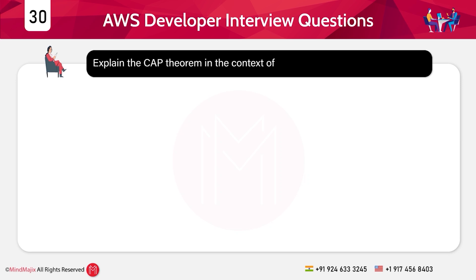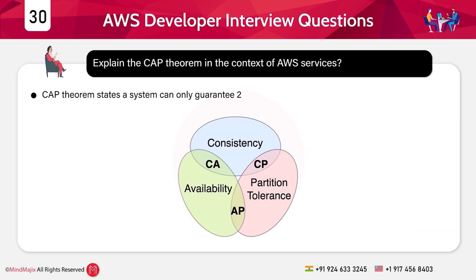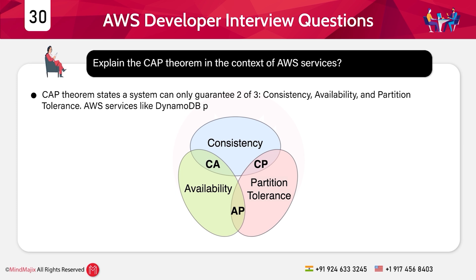Question 30: Explain the CAP theorem in the context of AWS services. Answer: The CAP theorem states a system can only guarantee two out of three properties: consistency, availability, and partition tolerance. AWS services like DynamoDB prioritize availability and partition tolerance while offering optional consistency.